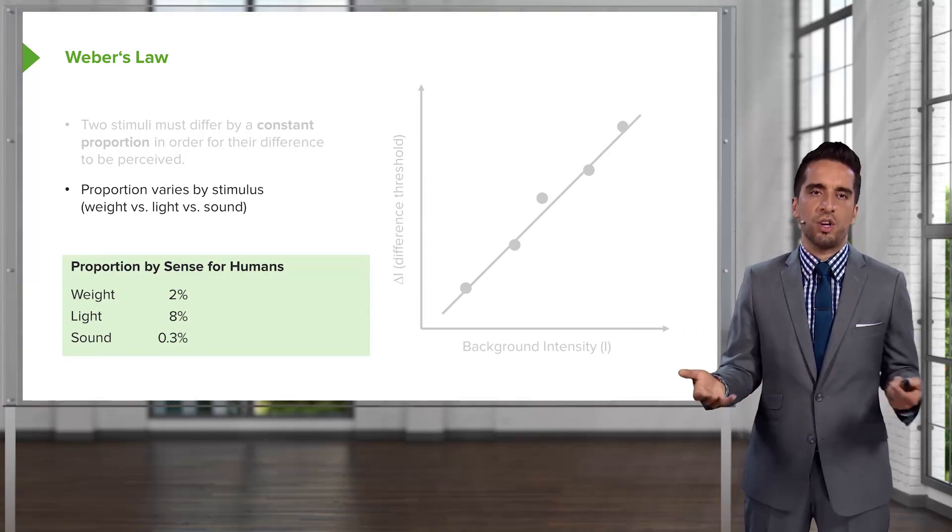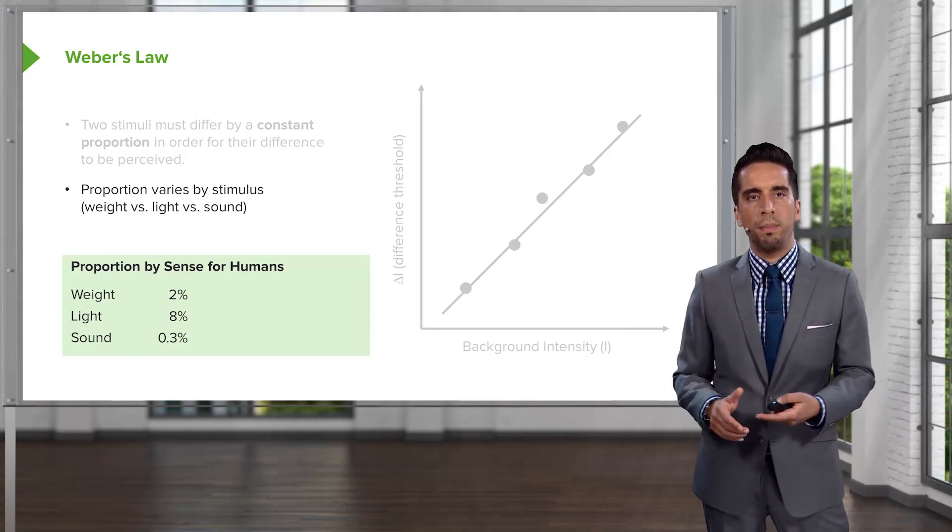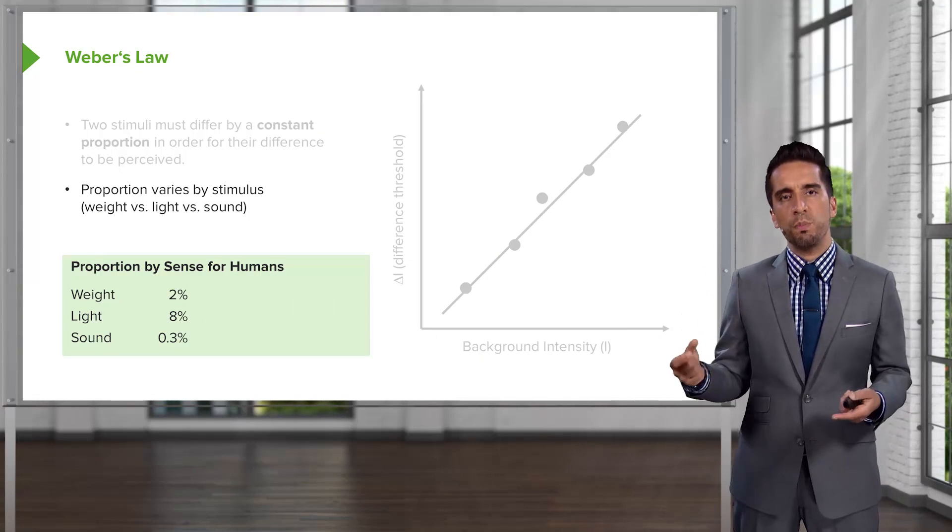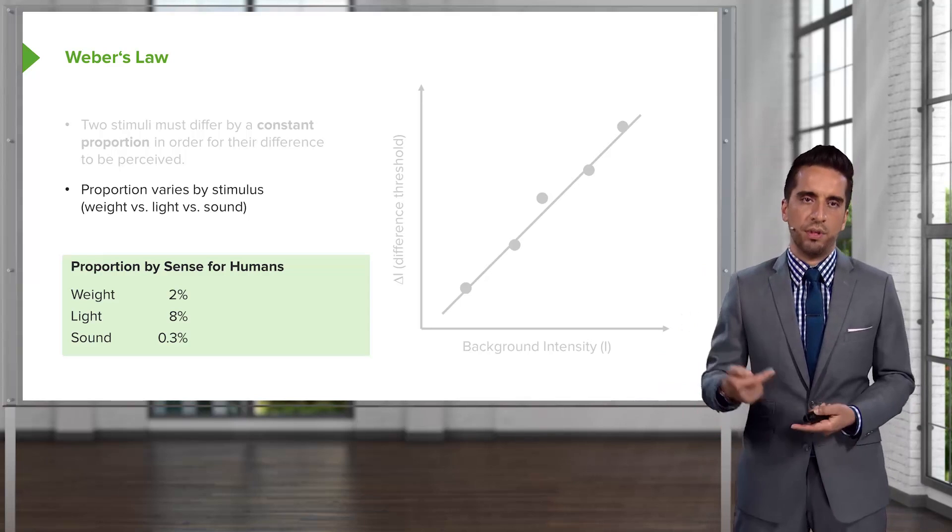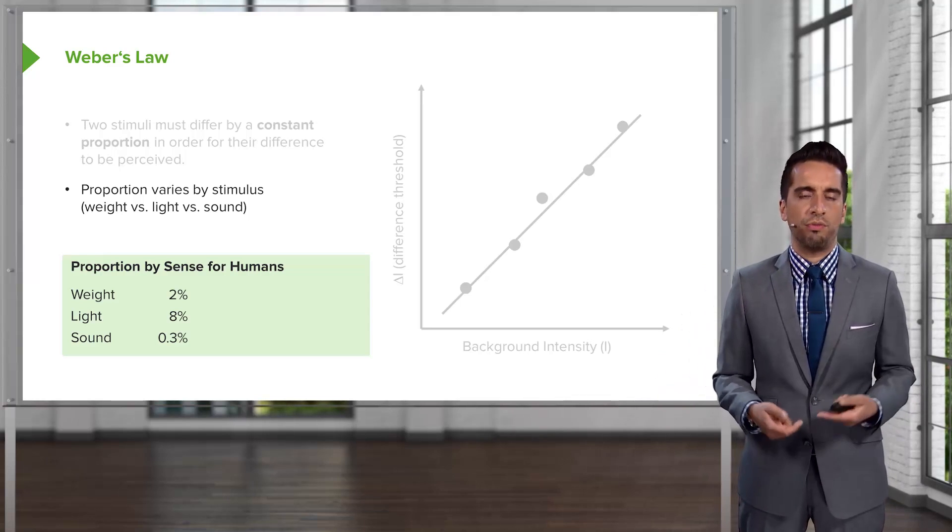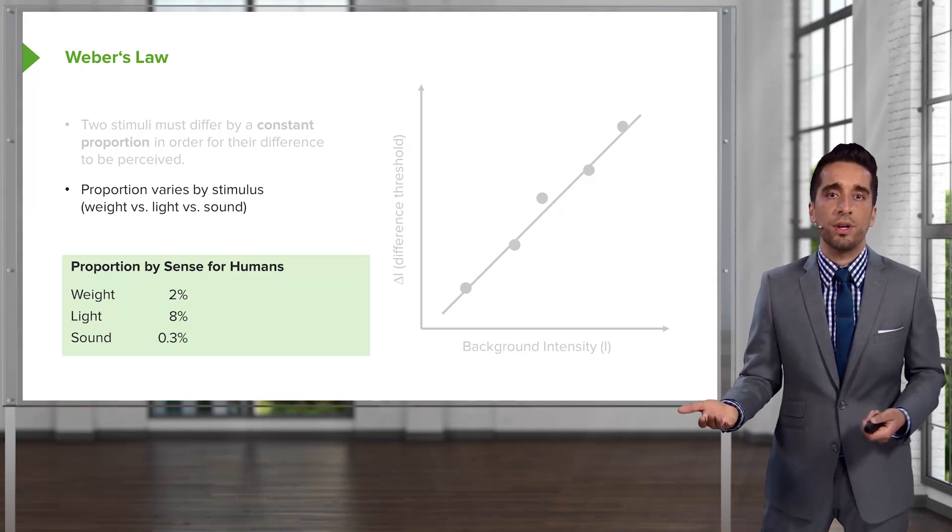And this is an average and generalization, so it can vary as well. But in weight, you need roughly a 2% JND. In light, roughly 8% JND. And for sound, roughly 3% change for you to detect that difference.